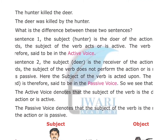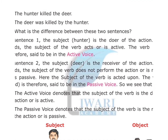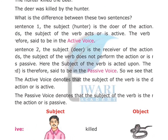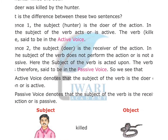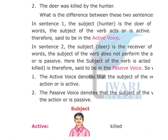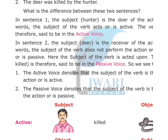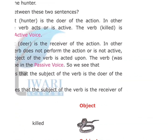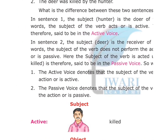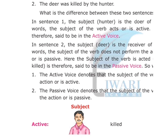What is the difference between these two sentences? In sentence one, the subject 'hunter' is the doer of the action. In other words, the subject of the verb acts or is active. So the verb 'killed' is therefore said to be in the active voice.